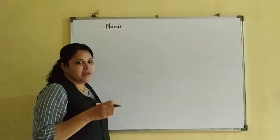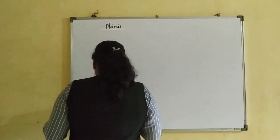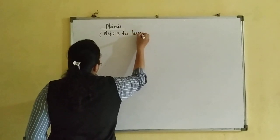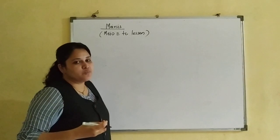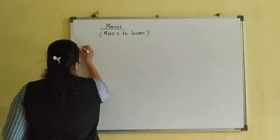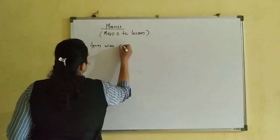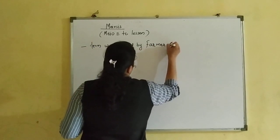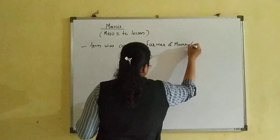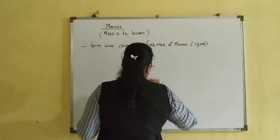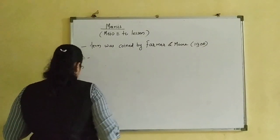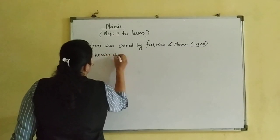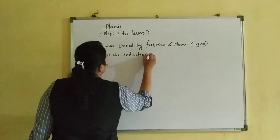First we will see what is meiosis, in which types of cells it takes place, what are the types of meiosis, and then we will see the stages. The term meiosis means to lessen or to reduce - specifically, to reduce the number of chromosomes. That division is known as meiosis. Meiosis is also known as reductional division.